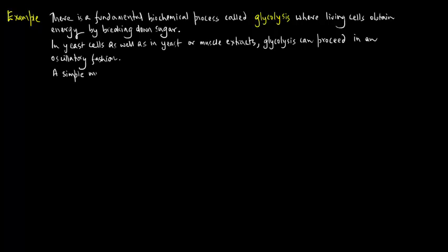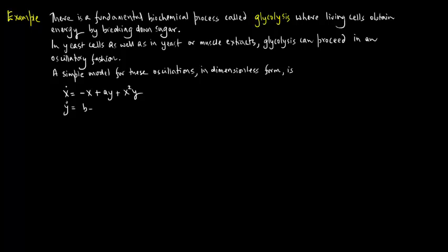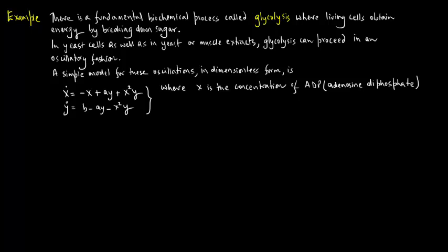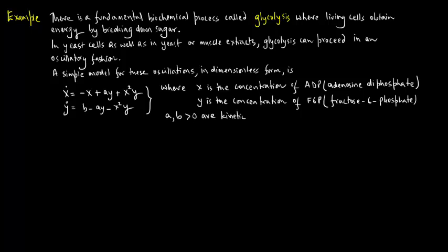A simple model for these oscillations in dimensionless form is: x-dot equals minus x plus Ay plus x²y, and y-dot equals B minus Ay minus x²y, where x is the concentration of ADP (adenosine diphosphate) and y is the concentration of F6P (fructose 6-phosphate), and A and B greater than 0 are kinetic parameters.